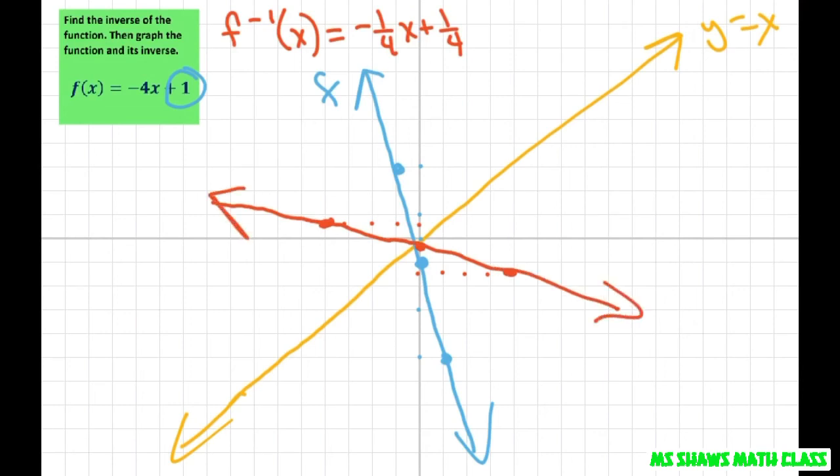So it does reflect over the y equals x. This is a little harder to see. But if you folded your paper on this line here, then these two lines should match up. And these two should match up. And these two should match up if you folded them. And this one again was f inverse.